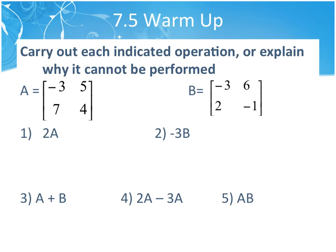In section 7-5, we learned about adding, subtracting, multiplying by a scalar, and then multiplying two matrices together. The rule for adding and subtracting is that they have to have the same dimensions — exactly the same. You can't add a 2×3 to a 3×2; they have to be the same dimensions.